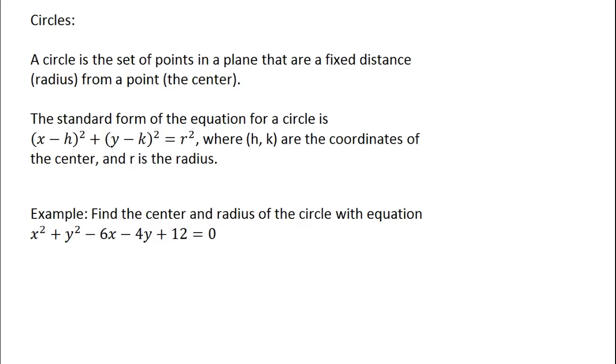Our last topic for this screencast is circles. A circle is a set of points in a plane that are at a fixed distance, which we call the radius, from a particular point, which we call the center. And we like to write the equations of the circles in this form: x minus h squared plus y minus k squared equals r squared. h and k are the coordinates, and notice that I'm always subtracting h and subtracting k. Pay attention to that. And r is a radius, not r squared, but r.